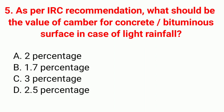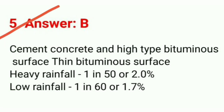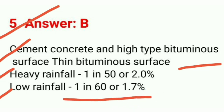Question 5: As per IRC recommendation, what should be the value of camber for concrete and bituminous surface in case of light rainfall? Correct answer option B: 1.7%. For cement concrete and high-type bituminous surface: heavy rainfall — 1 in 50 or 2%; low rainfall — 1 in 60 or 1.7%. Answer is B.